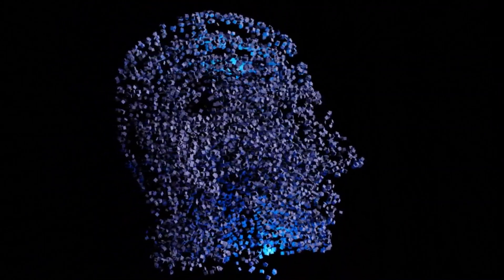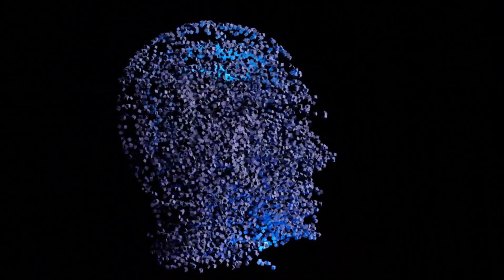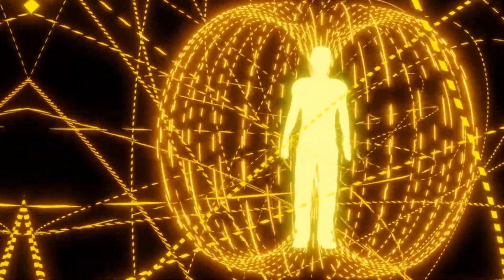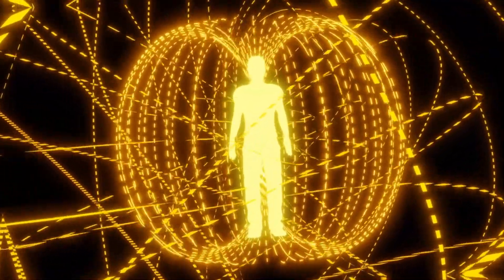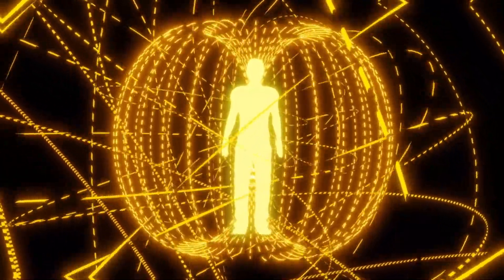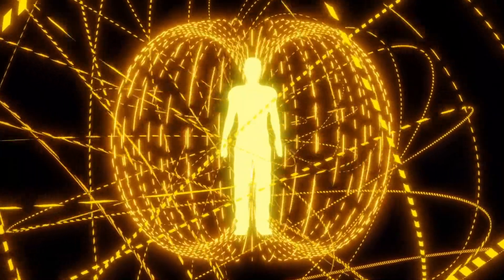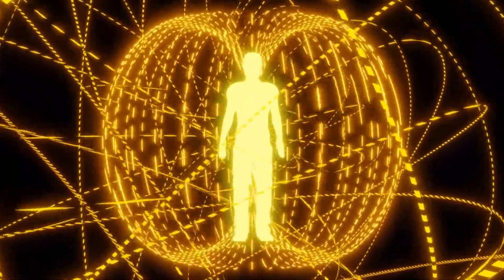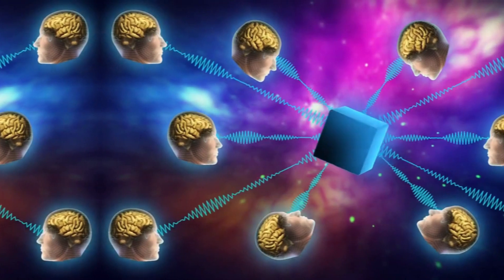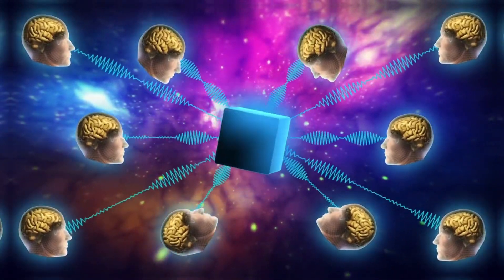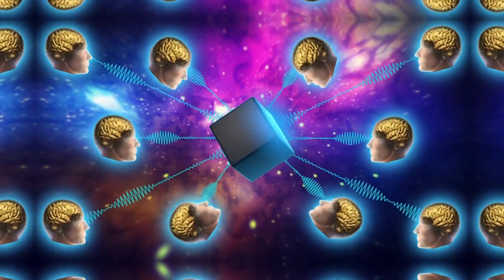To understand how AI Mind Reading works, we need to explore the science behind it. Researchers use a technique called electroencephalography (EEG) to measure brain activity. By placing electrodes on the scalp, EEG captures electrical signals produced by the brain. These signals are then processed by AI algorithms, which can interpret them and extract meaningful information.